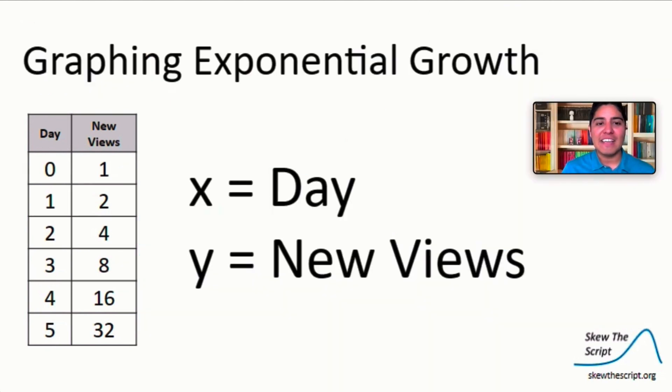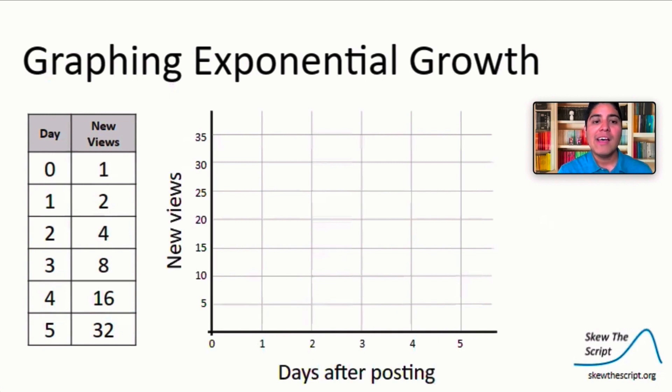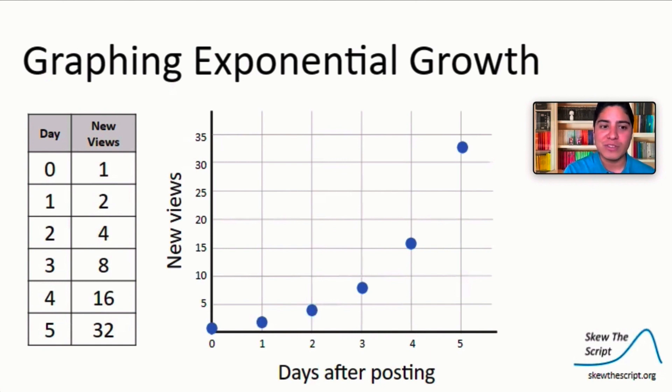So let's let the days be our x variable and let the new views be our y variable. Using these variable definitions, we can graph the number of views each day. So let's plot each coordinate and then fit a nice curve to the data. When we plot a curve to this data, notice it is not a straight line.